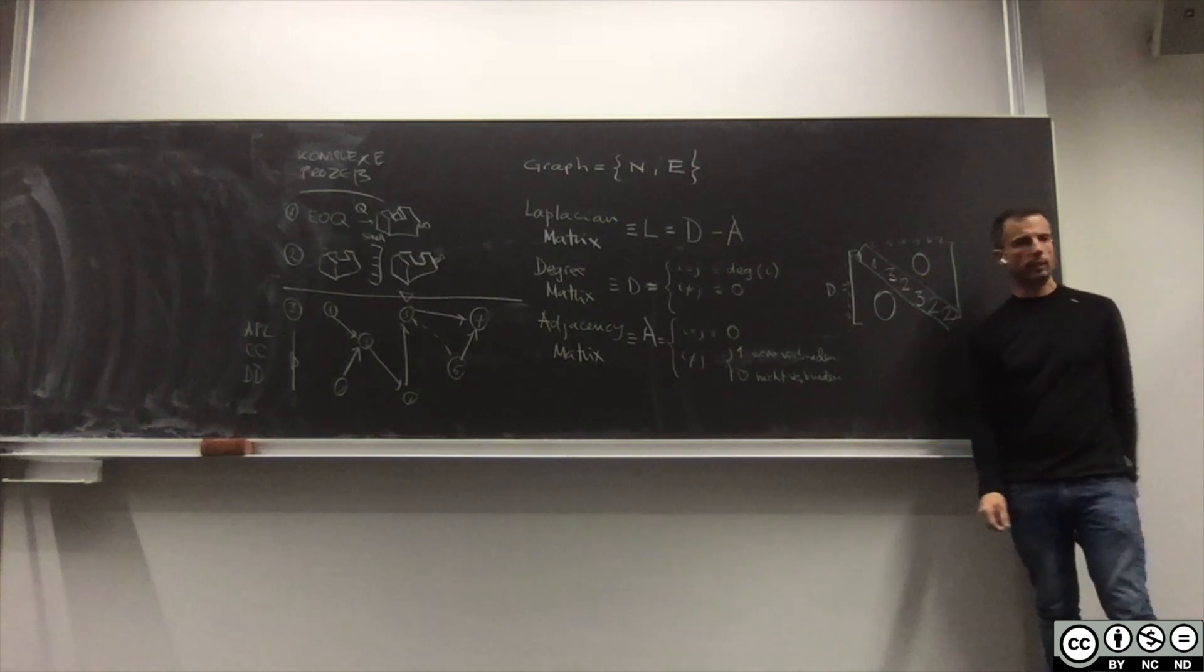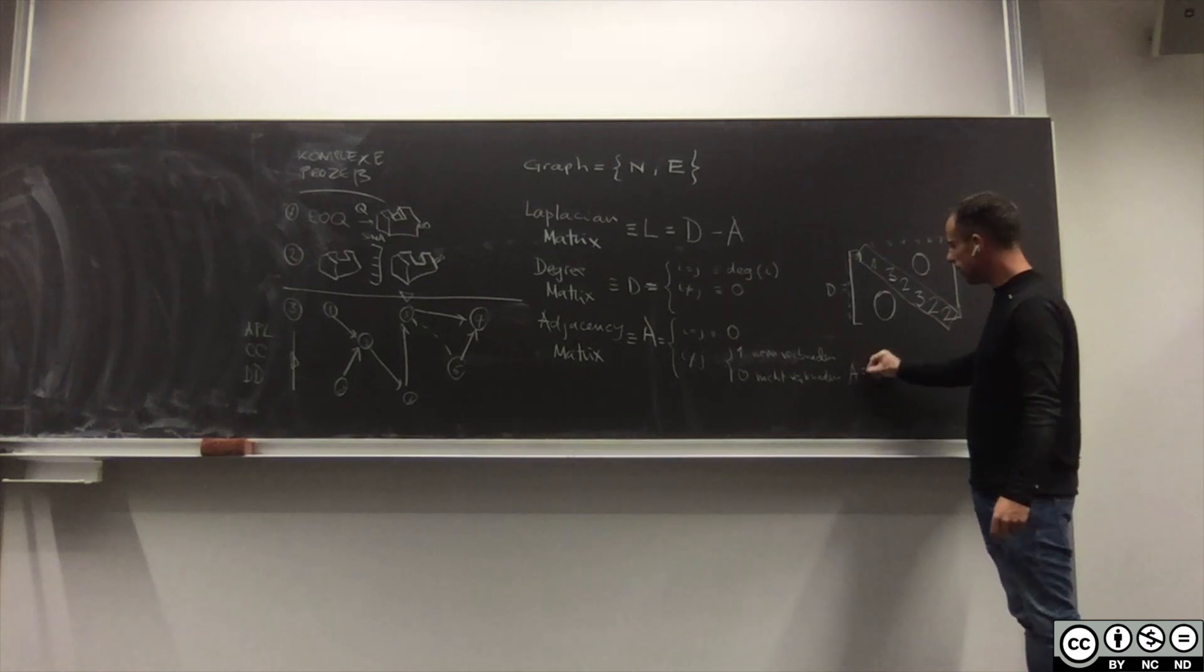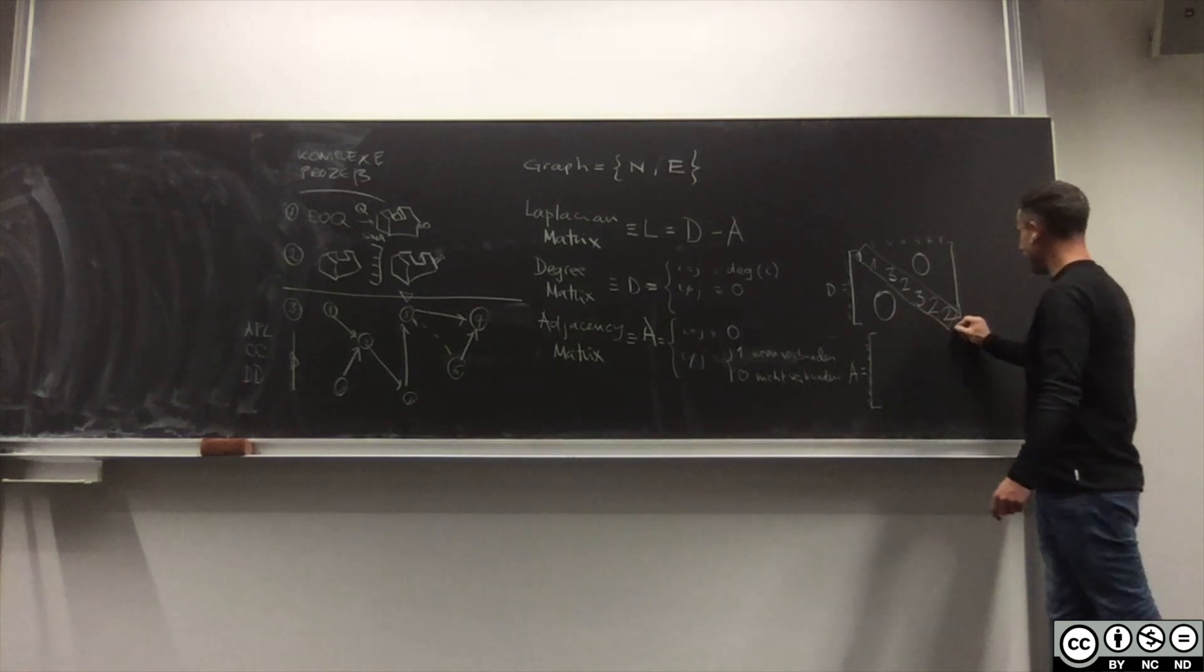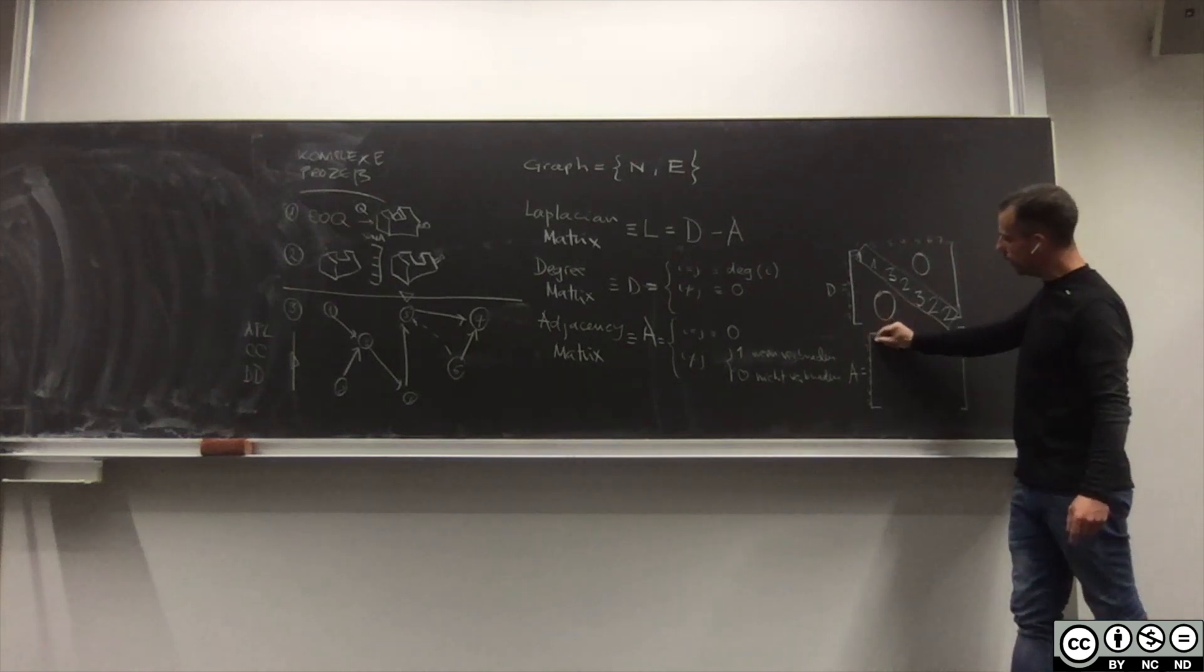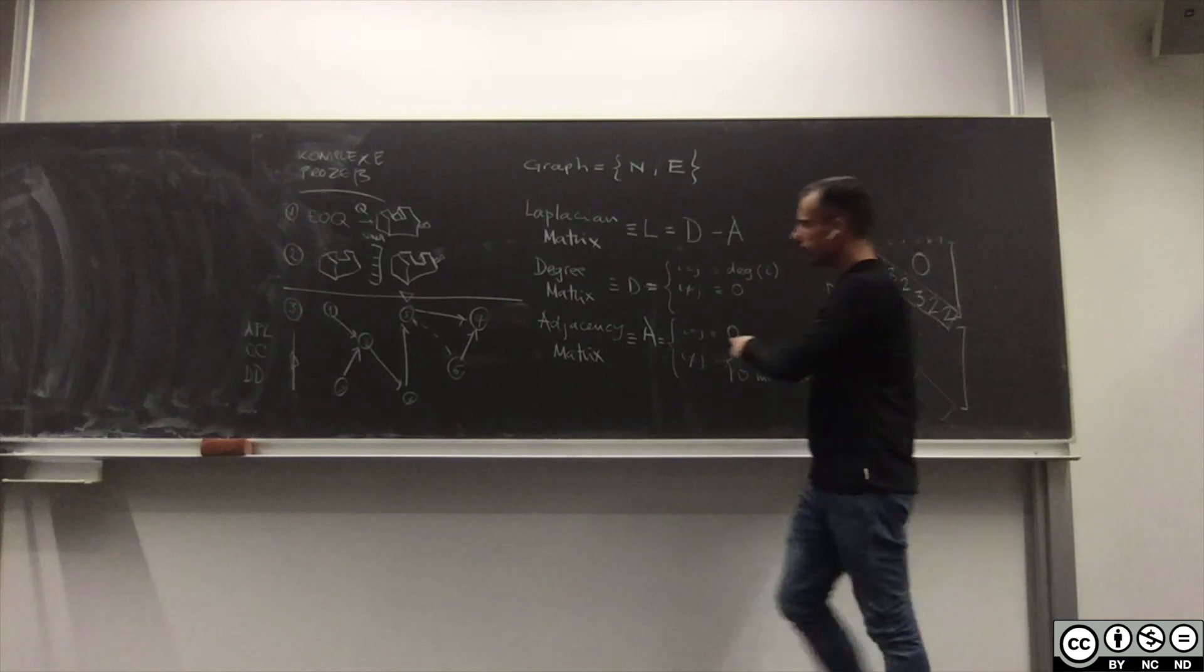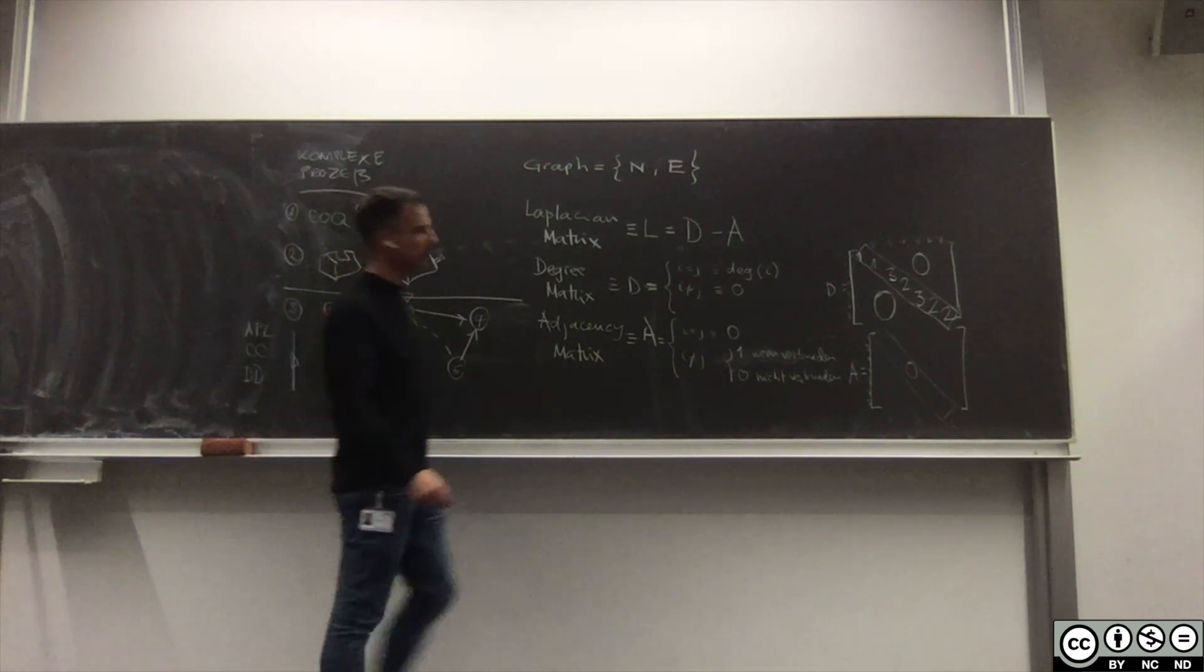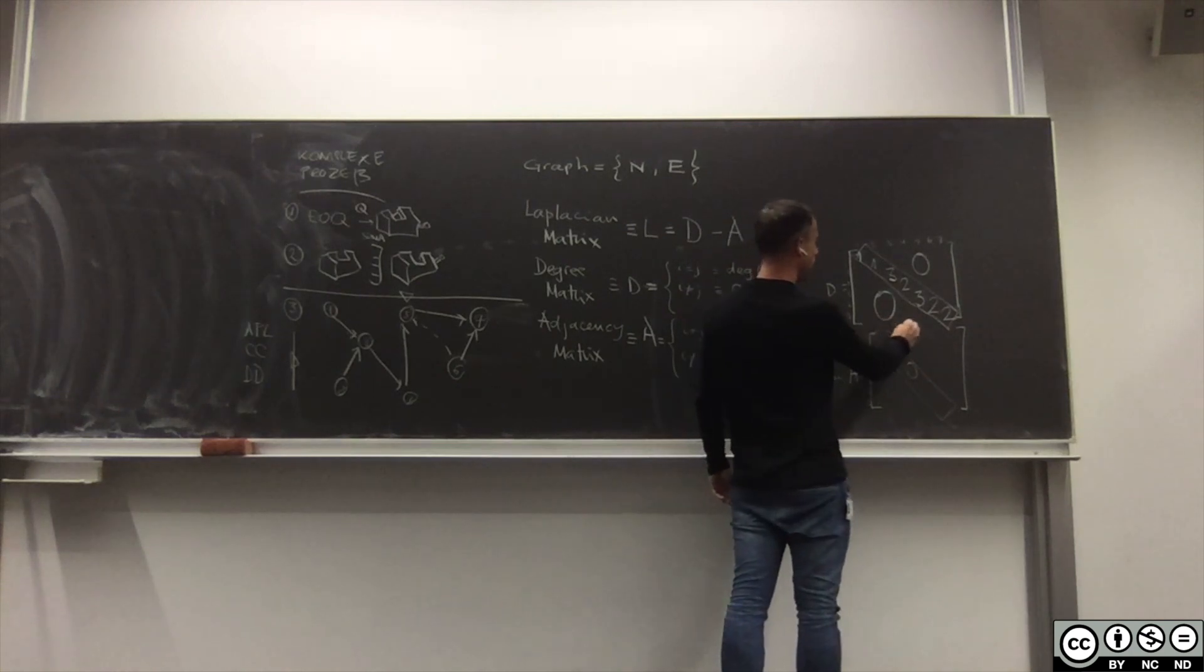Die Adjacency Matrix ist gleich wieder 1 2 3 4 5 6 und 7. In der Diagonale ist es ein 0 wenn I gleich J, also alles 0. Und dann 1 hat wie viele - 1 ist verbunden mit 2? Nein, dann habe ich ein 0. Ist 1 verbunden mit 3? Ja, also ein 1.